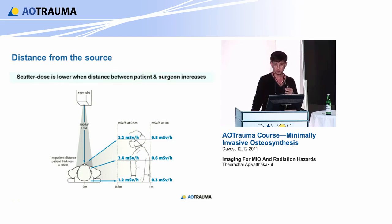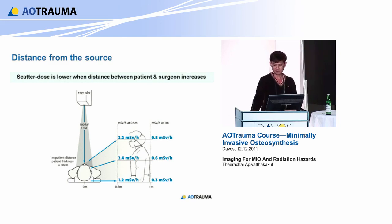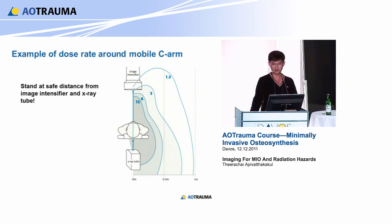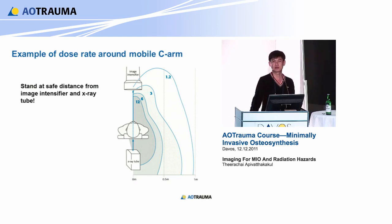This is a good position - the image intensifier is on top. You see at 0.5 meters versus one meter - directly at the source you have 12 units. But when you step back and stand here - this is your head position - it's lower by more than 10 times. So move away before you step on the paddle.